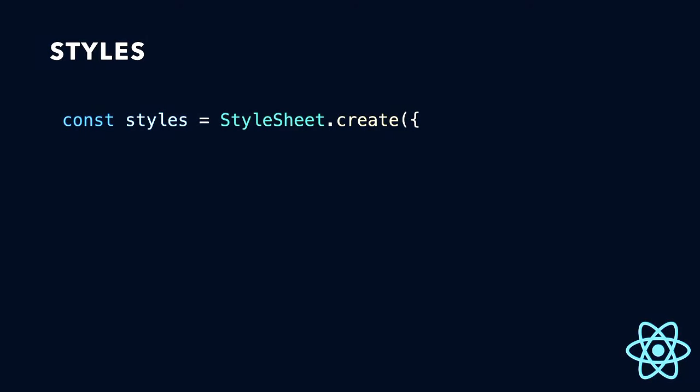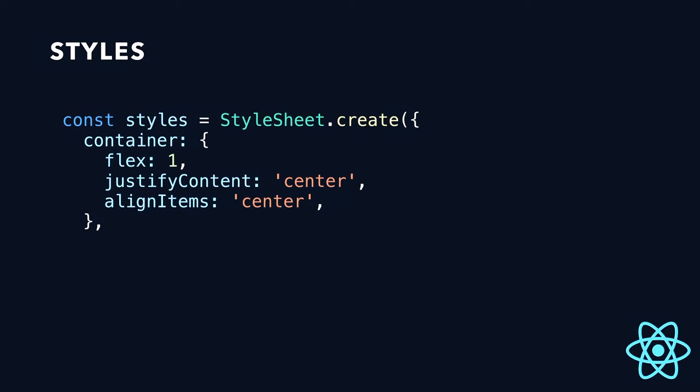We're going to create a constant called styles and create a new StyleSheet within that. StyleSheet is something you can import from React Native. It looks very similar to CSS, but it's JavaScript. Basically we'll make a container class and add some flex properties — justify our content. There's a big long list in the docs of all the CSS properties you can use and how they look in React Native. It's basically identical except it's camelCase. You make your style constant and then feed chunks of this object down into your components.